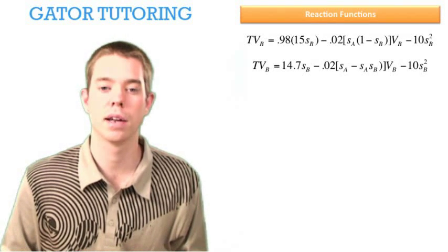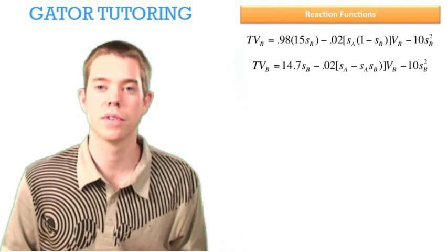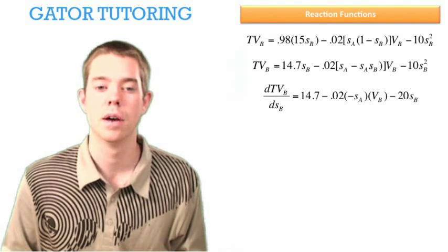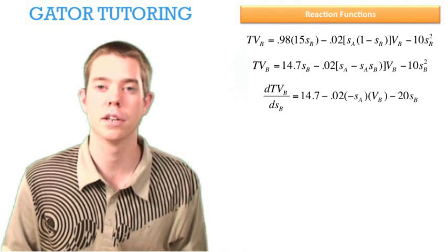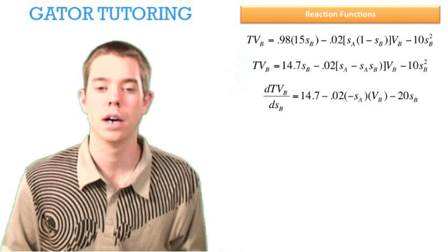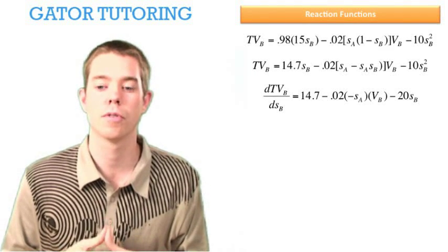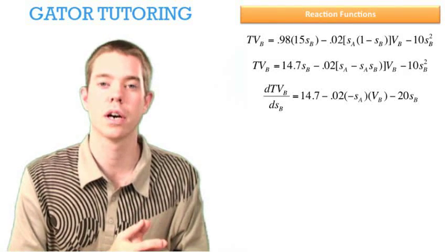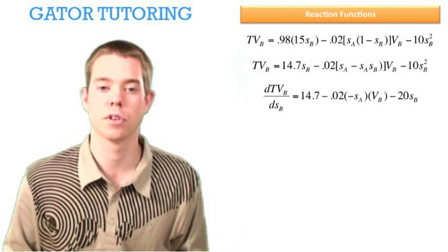Let's do this. First we can combine like terms and make our life a little easier. Now we can take the derivative with respect to SB. We do this and we see that it's 14.7 minus 0.02 multiplied by (-SA) multiplied by VB minus 20*SB. We want to solve for SB. We know we're going to set this derivative equal to zero. So we want to put SB on one side of the equal sign with nothing with it, and everything else on the other side. That will give us B's reaction function.